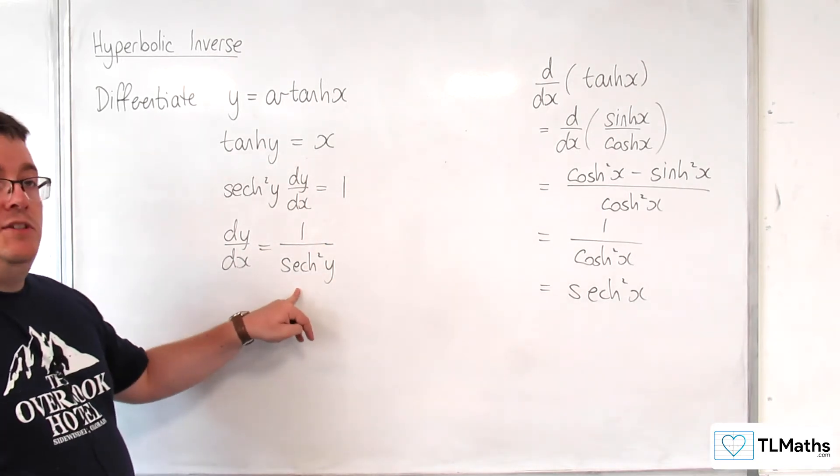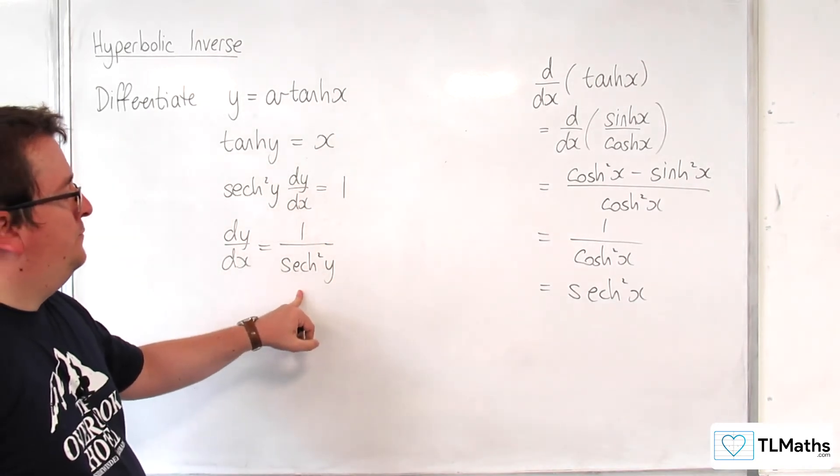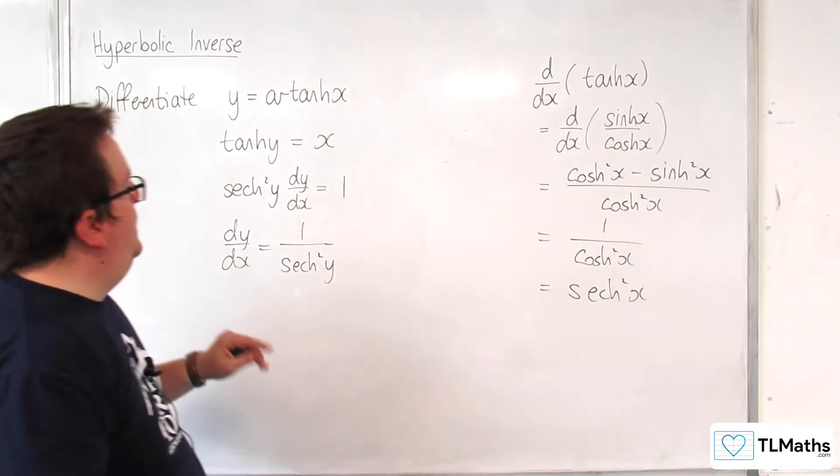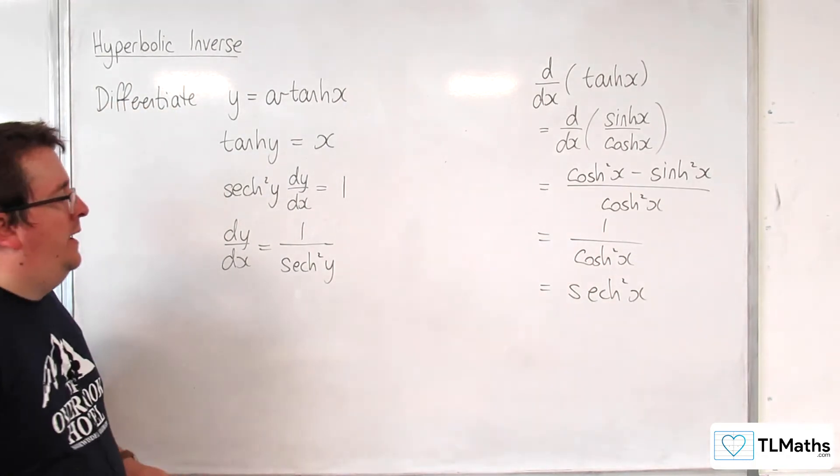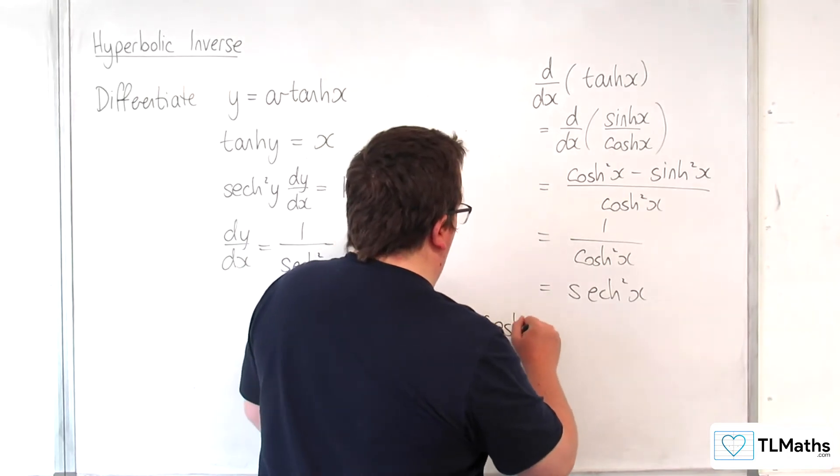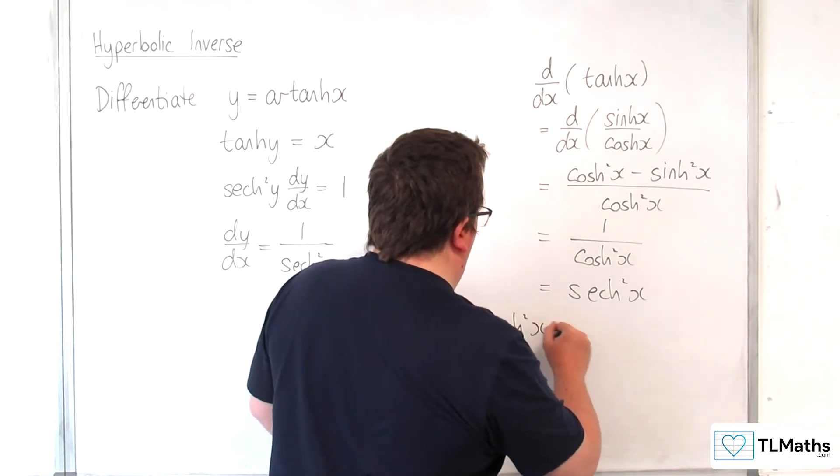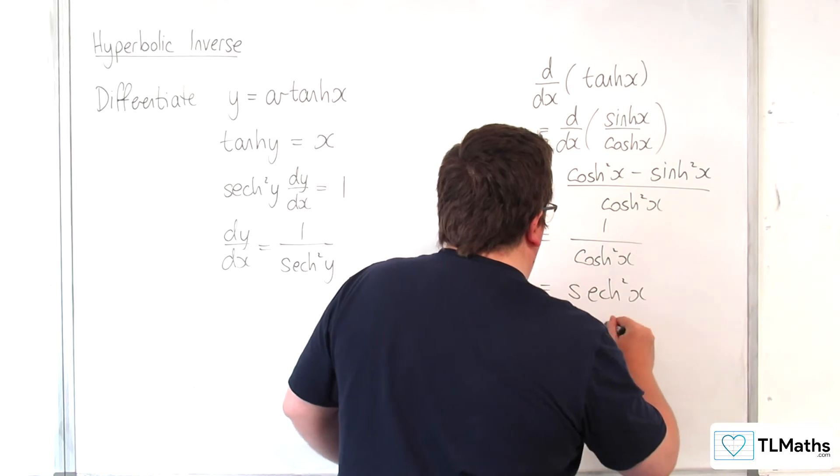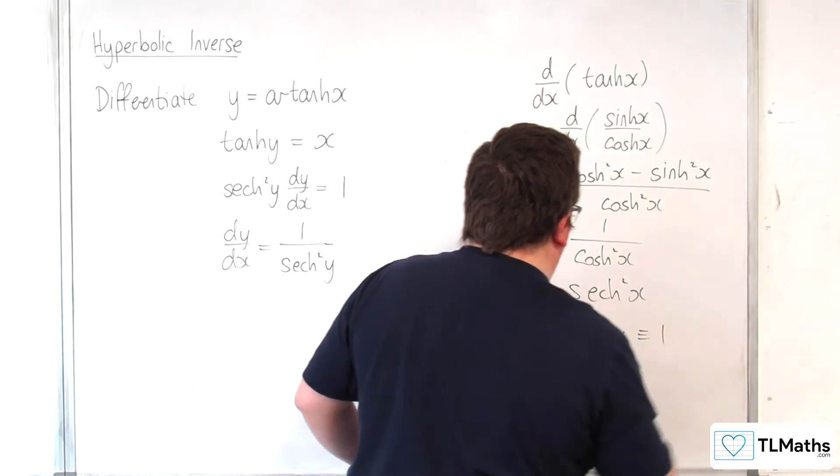Now we want to write this back in terms of x if we can. So we need to recall the trig identity here. So, cosh squared x take away sinh squared x is equivalent to 1.